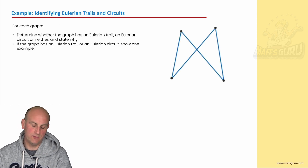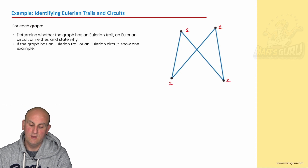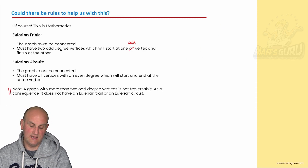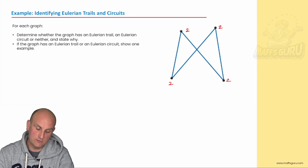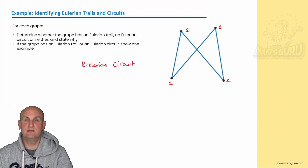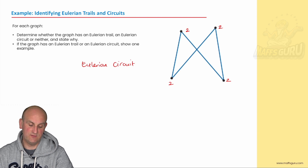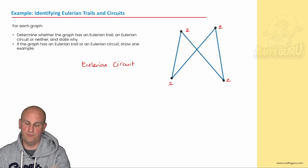For each of these graphs, let's look at some examples. Determine whether the graph has an Eulerian trail, an Eulerian circuit, or neither, and say why. The first graph has degrees 2, 2, 2, and 2 — all even degrees. So that is an Eulerian circuit, E-U-L-E-R-I-A-N circuit, because all vertices have even degrees. If the graph has an Eulerian trail or circuit, show one example — in that situation you would simply colour it in.